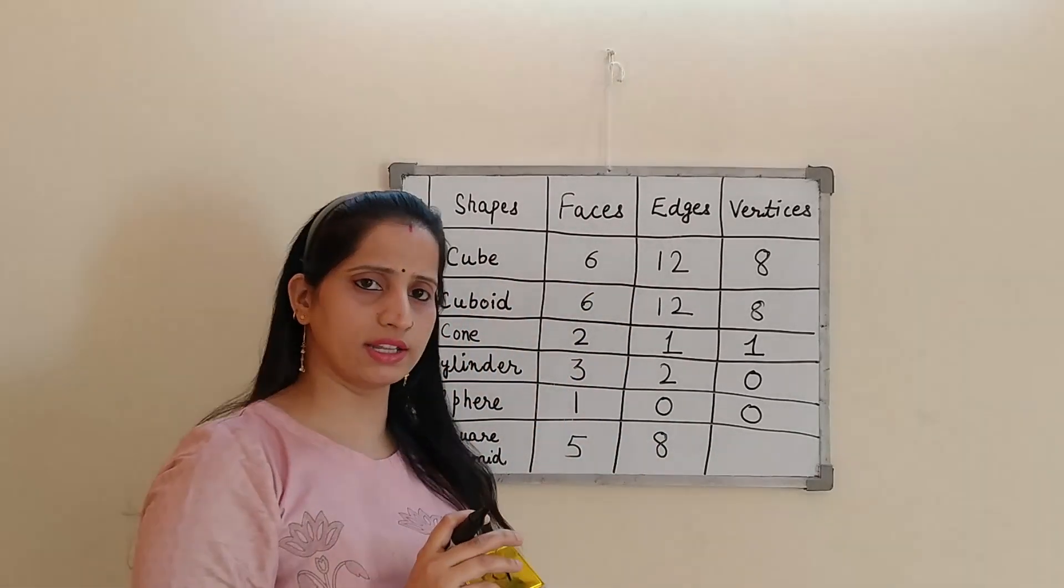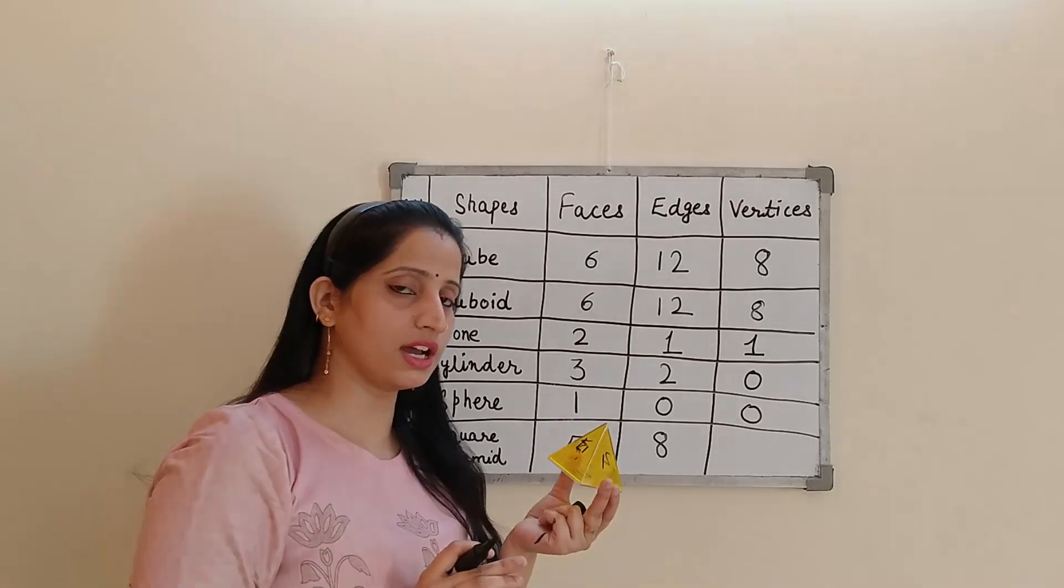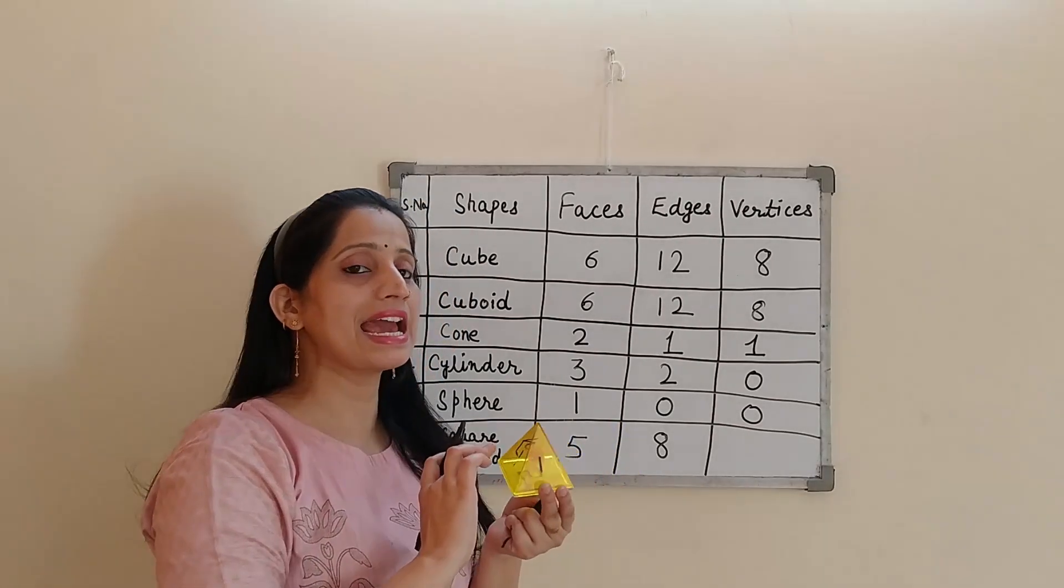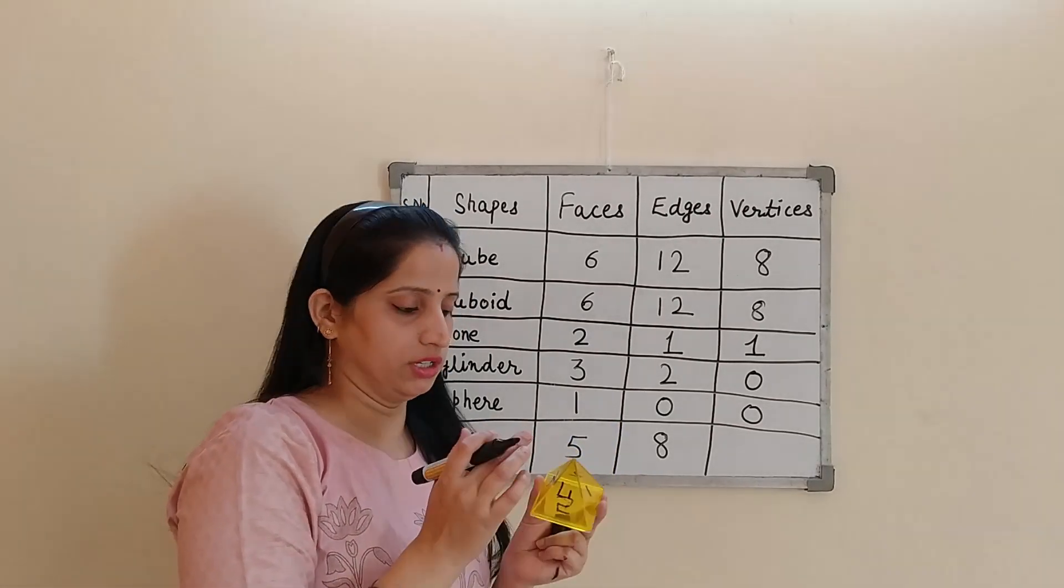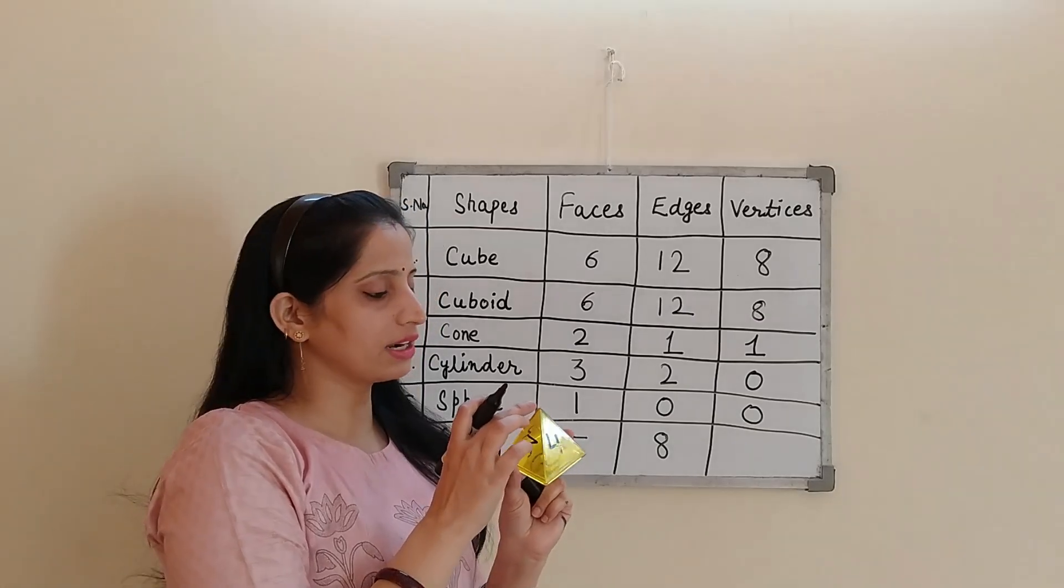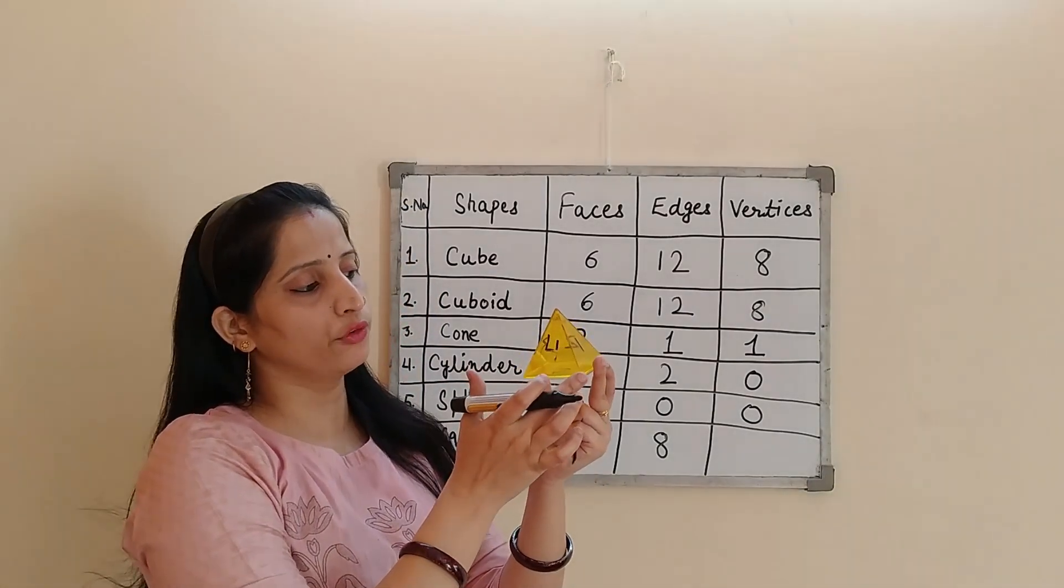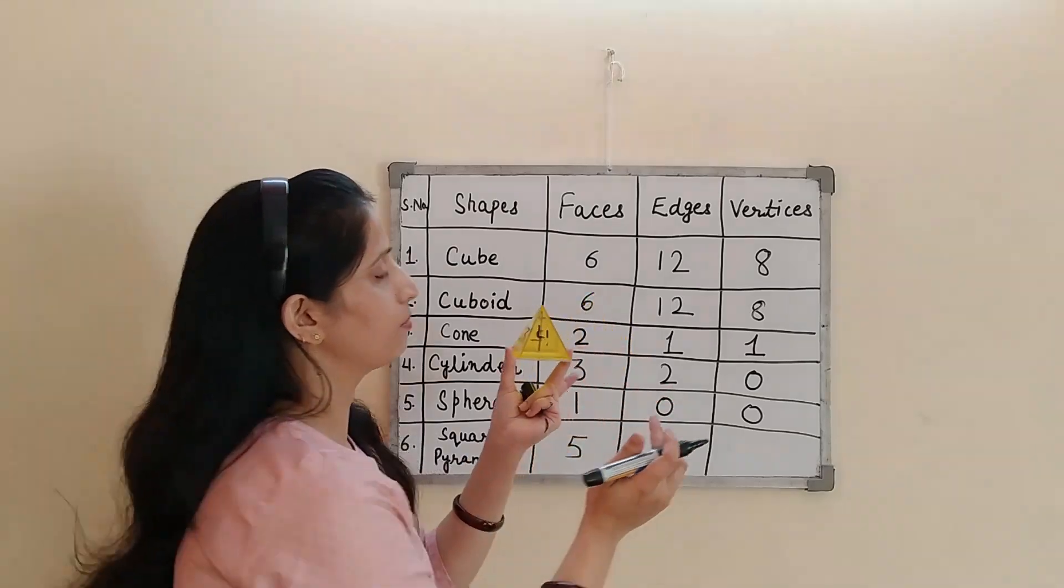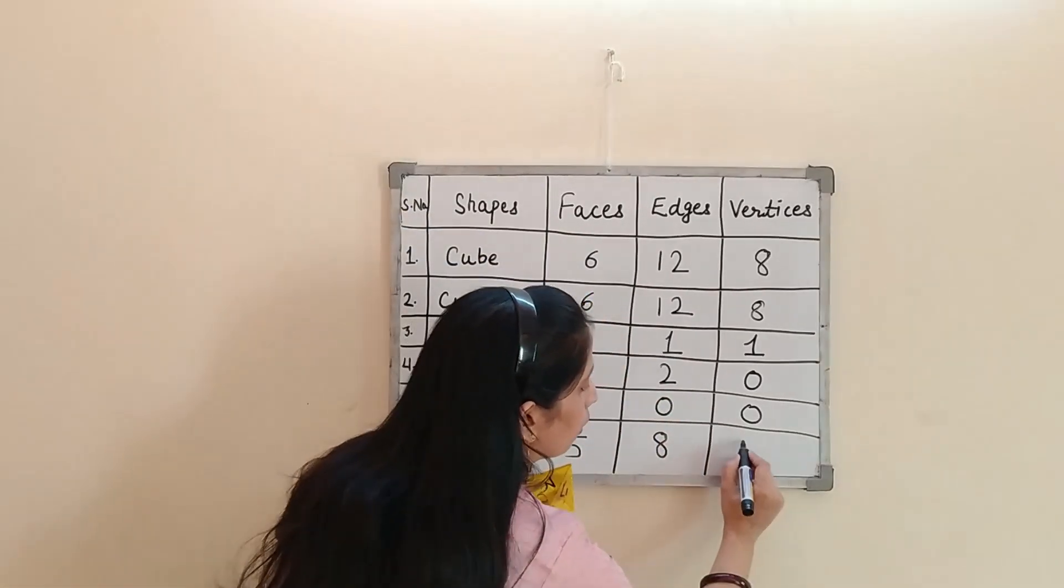And how many vertices? Vertices again, I have told you it's the corners. Where these edges meet with each other. So this is the first vertex. 1, 2, 3, 4, and 5. So the number of vertices are 5.